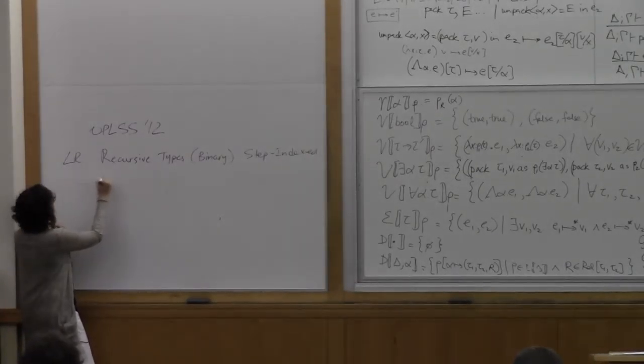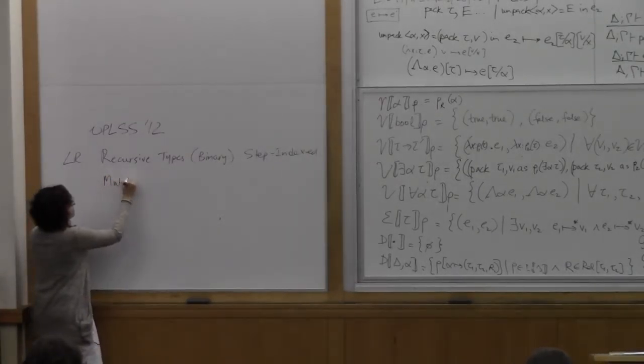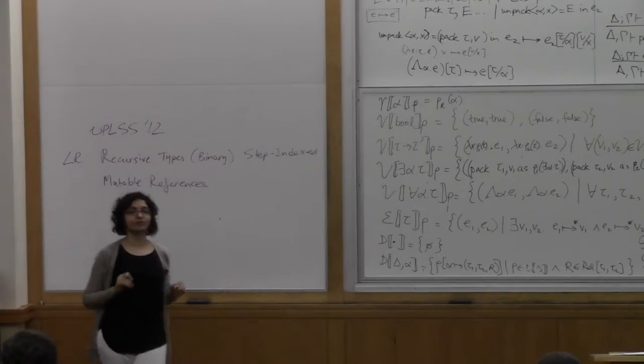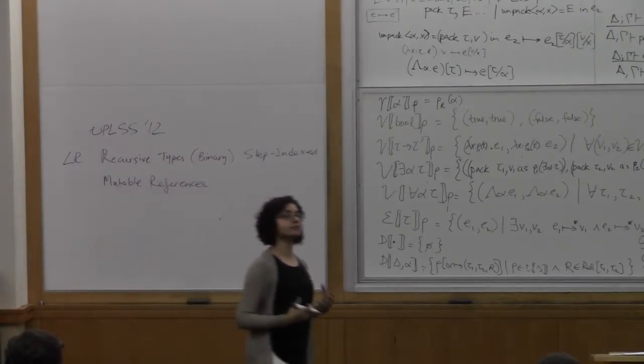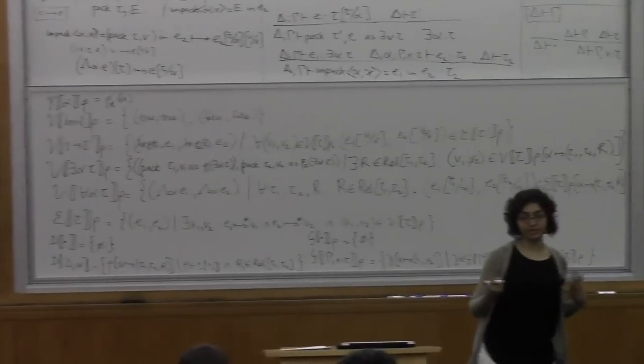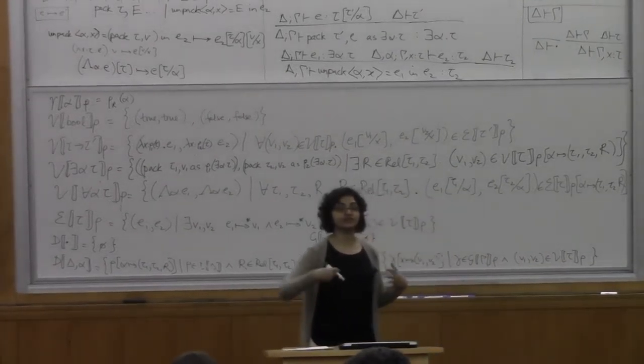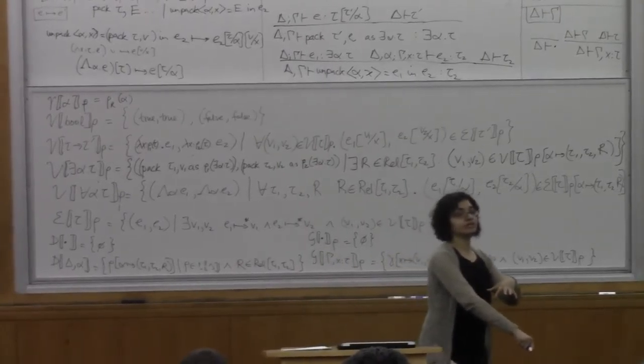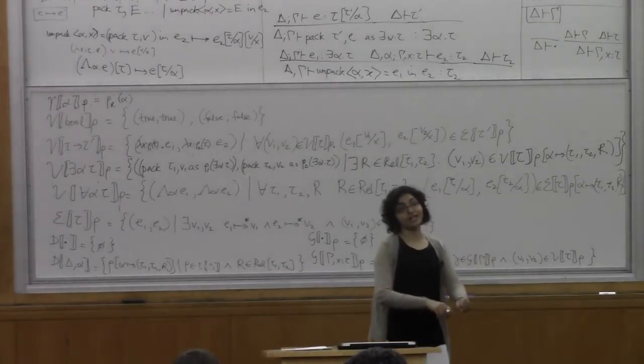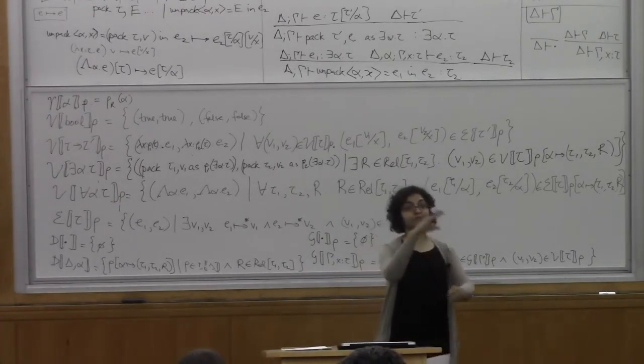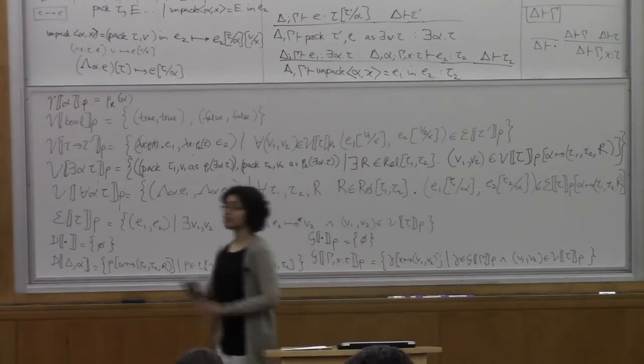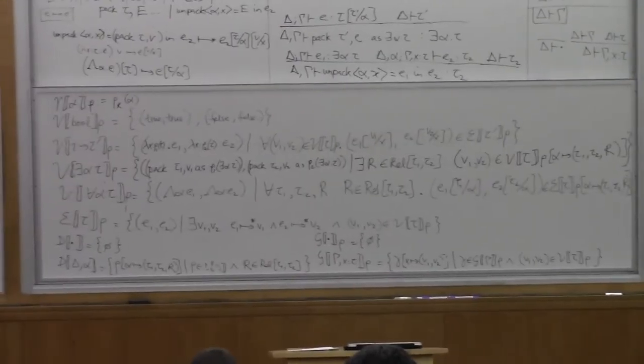Probably the second last lecture that year also covered mutable references. So I did a type safety proof for mutable references and mutable references are really hard. In particular, when I say mutable references, I'm talking about ML style mutable references in the sense that you can take functions and closures and store them into your memory. Once you can do that, you can create cycles in memory. Once you can create those cycles in memory, the semantic model that you try to build for that becomes utterly circular and it needs to be stratified and the step indexing helps you stratify it. So all of those details are in that lecture.